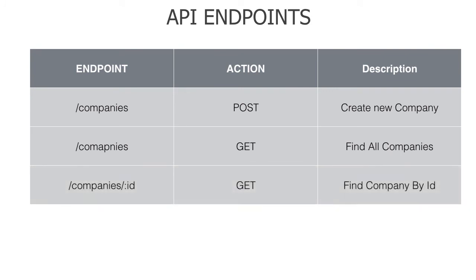You can also find a company by ID. If you want to find the company by ID, you have to use the route /company/:id. It is also a GET request.